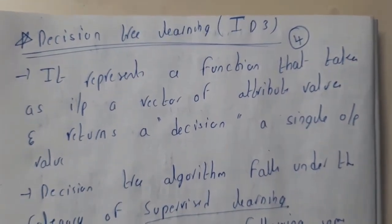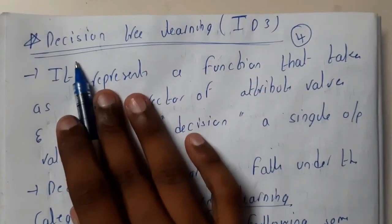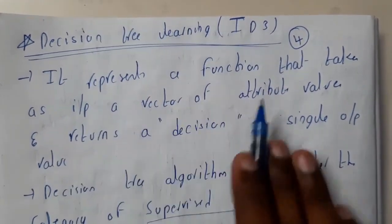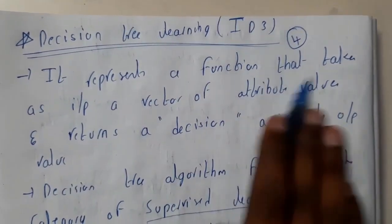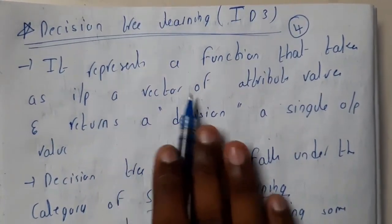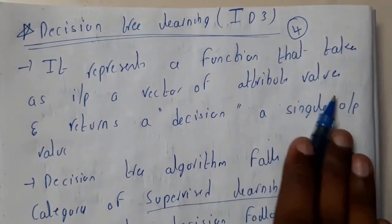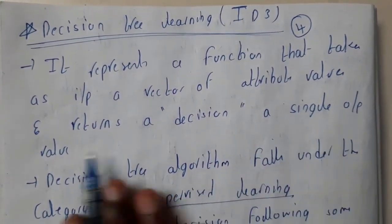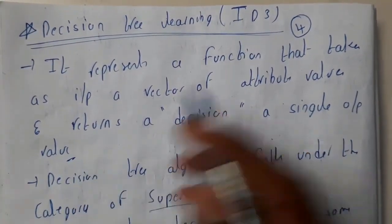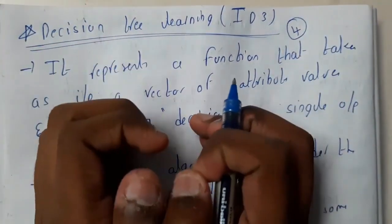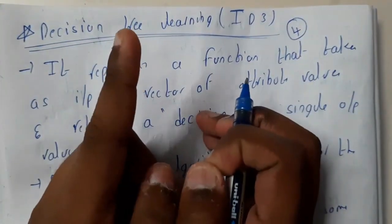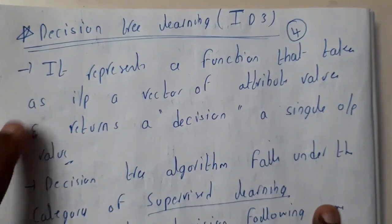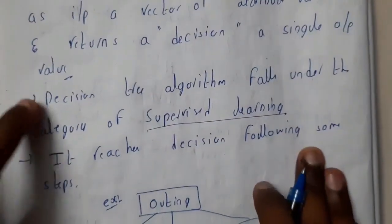Decision tree learning, specifically ID3, represents a function that takes inputs — a vector of attribute values — and returns a decision, a single output value. It takes many inputs and gives only one output: whether to go or not. That is essentially your decision tree algorithm.